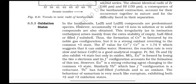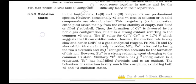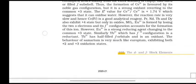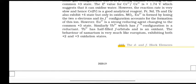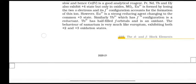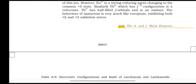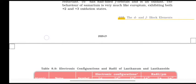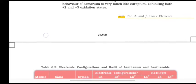Pr, Nd, Tb, and Dy also exhibit +4 states, but in oxides MO2. Eu2+ is formed by losing the two s electrons; the f7 configuration accounts for formation of this ion. However, Eu2+ is a strong reducing agent, changing to the common +3 state. Similarly, Yb2+ has f14 configuration and is also a reductant. Tb4+ has half-filled f orbitals as does Eu3+. The behavior of samarium is very much like europium, exhibiting both +2 and +3 oxidation states.